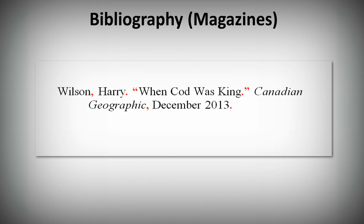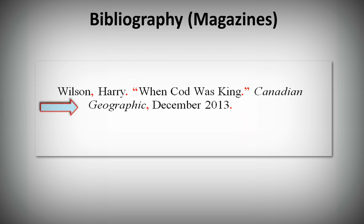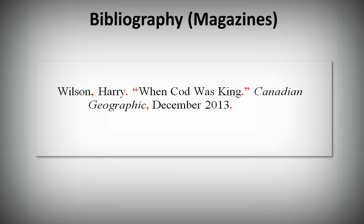In your bibliography, there are some differences in formatting. Put the author's last name first. In some places where you used a comma in the note, you use a period in the bibliography. The first line of each citation is flush left, and the following lines are indented. For magazines, you don't include the page numbers of the full article in the bibliography.